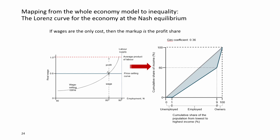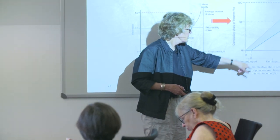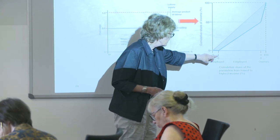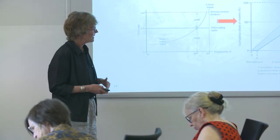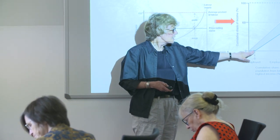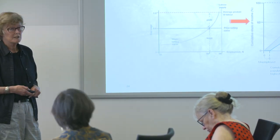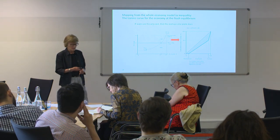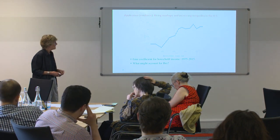If wages are the only cost, then the markup is the profit share. So we can very simply go from the equilibrium in the labor market and product market to construct the Lorenz curve. Here are the 10% unemployed getting no income; this is the wage share at 60%, giving us the second point on the Lorenz curve; and that's the profit share — the third point. Back to the data.